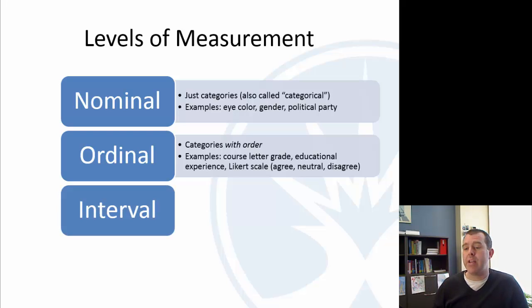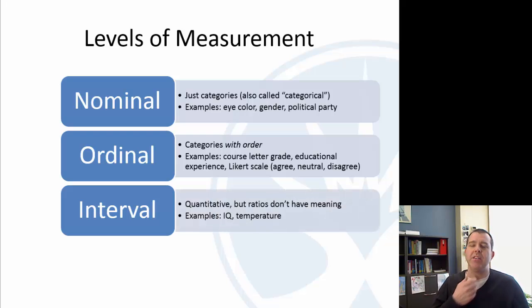Interval now is quantitative, but ratios don't have meaning. So if we look at intelligence quotient, it's a very flawed measure by the way. But it's a numerical measure of some type of intelligence. But if you say that, so if you look at a ratio, so somebody who's an IQ of 80 versus someone who's an IQ of 160, does that mean they're twice as smart? What does twice as smart mean? There's no way to really measure that ratio.